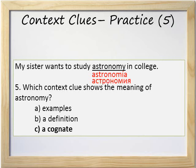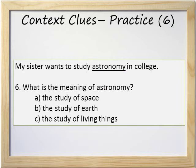Also, in Russian, astronomía is a cognate of astronomy in English. Other languages also have cognates for astronomy. Number 6: What is the meaning of astronomy? A. The study of space. B. The study of earth. Or C. The study of living things. If you have a cognate in your own language, then you might already know the meaning. The answer is A. The study of space.